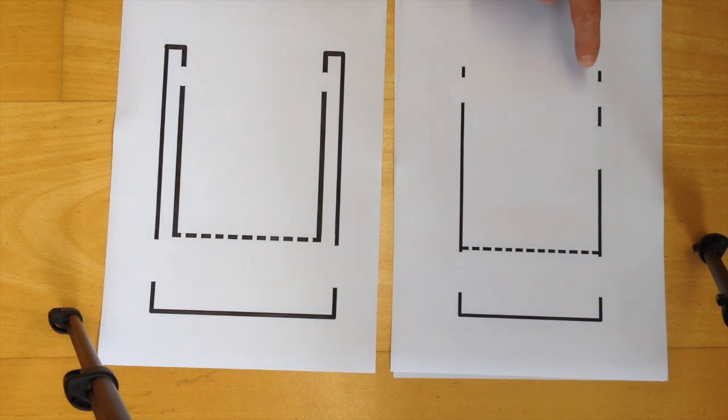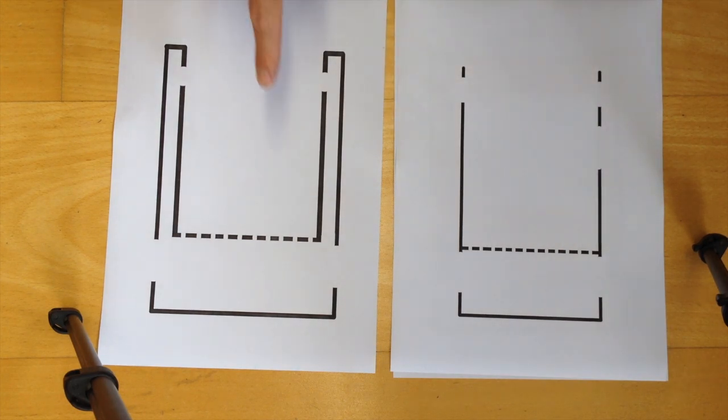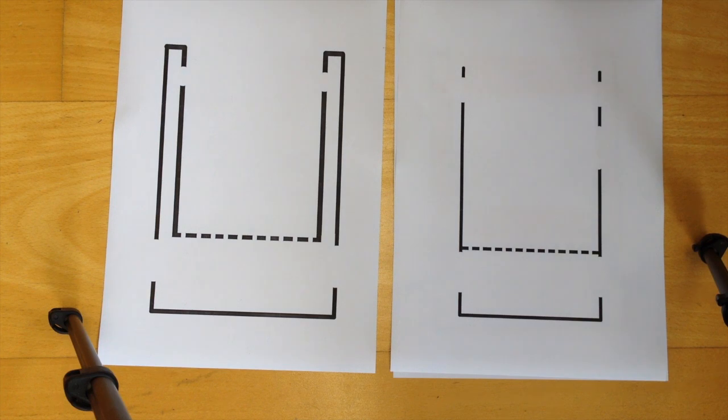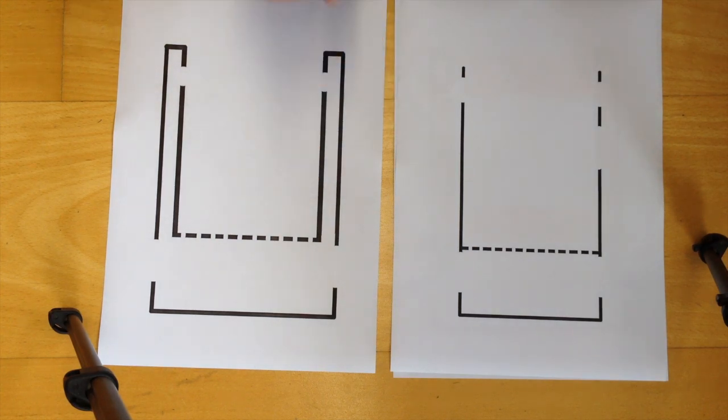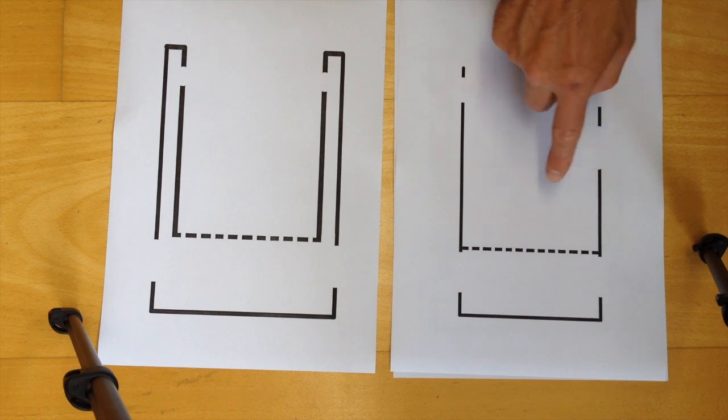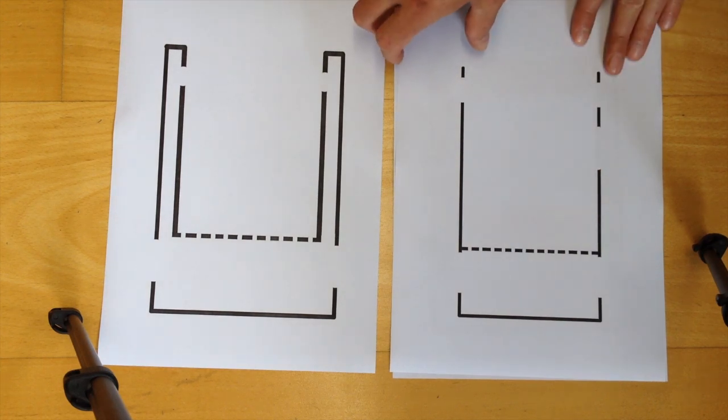That drawing shows the schematics of a hobo stove, and that one shows a wood gas stove. So as you can see, what's the difference between the two stoves? This one has two walls and this one has just one wall, and there's a simple reason for that.